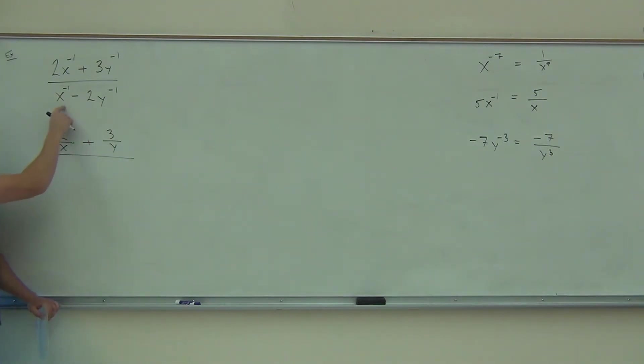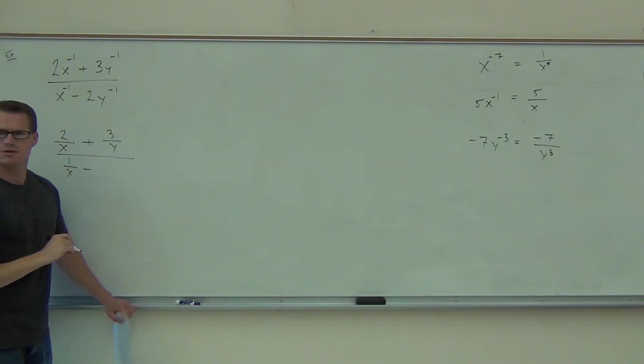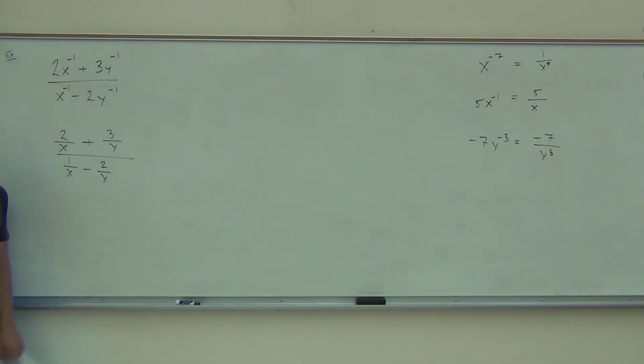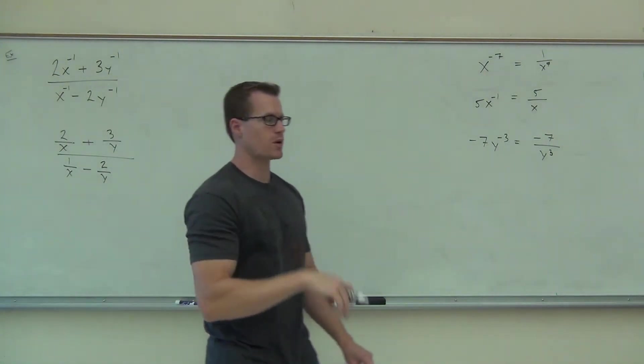What's this one? 1 over X. That one, 1 over X. Then a minus sign. And then what's the last one, folks? 2 over Y. 3 over Y. That's it.